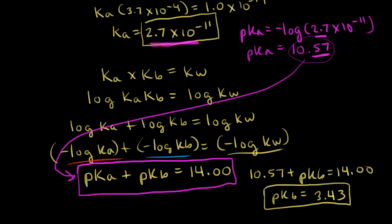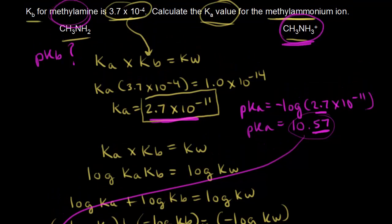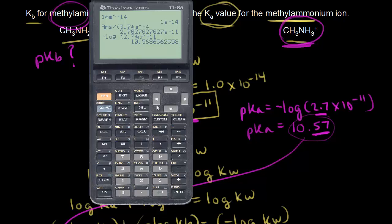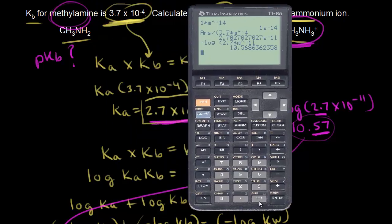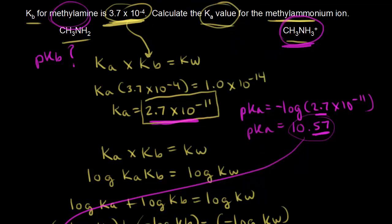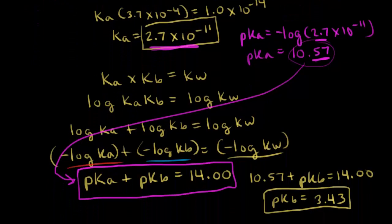We can double-check that result. Taking the negative log of Kb, which is 3.7 times 10 to the negative 4, gives us 3.43 — exactly what we calculated. So pKb equals 3.43. That confirms the relationship between Ka and Kb, and between pKa and pKb.